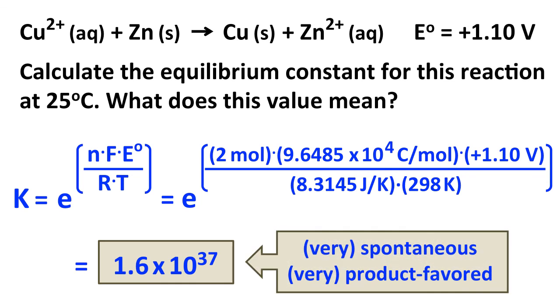So we have a very, very big number for the K value, the equilibrium constant. And a very, very big K value means the reaction is very spontaneous or very product favored, which is, of course, what we deduced from determining delta G naught and also from the E naught value.